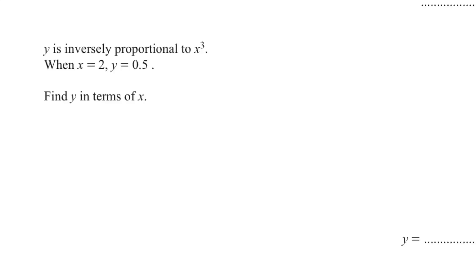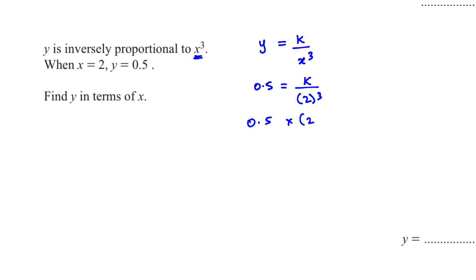Question number seven: y is inversely proportional to x cubed. When x is 2, y is 0.5. Find y in terms of x. If we have inversely proportional, we form the equation y equals k over x cubed. Substitute y = 0.5 and x = 2, cross multiply: 0.5 multiplied by 2 cubed gives k = 4. So the equation is y = 4 over x cubed.